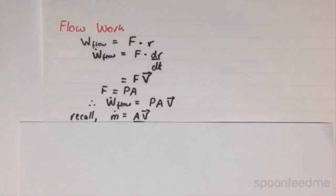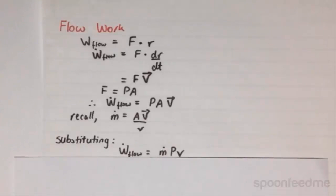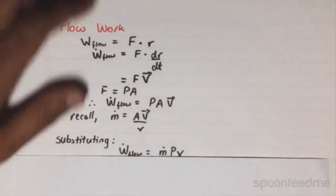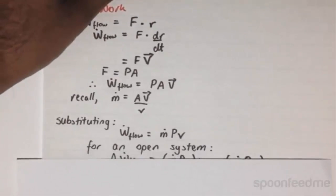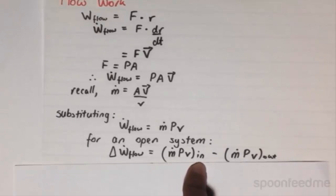Recall that the mass flow rate equals Av/v. Substituting this equation into the previous one, we get that the work flow dot equals ṁ times the pressure times the specific volume. With respect to an open system, the change in work flow is just ṁpV_in minus ṁpV_out.